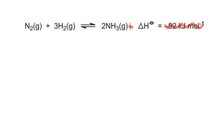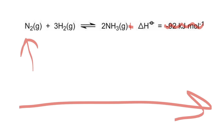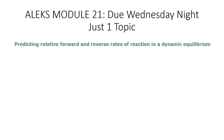Now if we do the opposite, which is increase nitrogen, the reaction shifts to the right. Hydrogen is going to go down and NH3 is going to go up, and the heat is going to go up — so the glass is going to feel warmer. You can practice this with Alex module 21. I picked new questions that were not like the ones we did in class, but were ones that you did on your own when you finished this module.